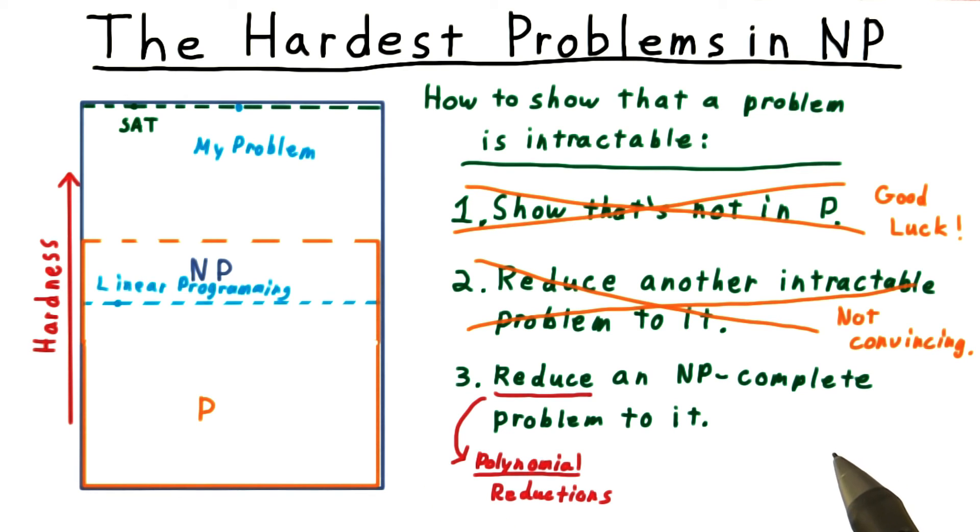There are two parts to this argument. The first is the idea of a polynomial reduction. We've seen reductions before in the context of computability. Here the reductions would not only have to be computable, but computable in polynomial time. This idea will occupy the first half of the lesson.